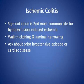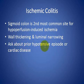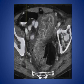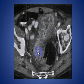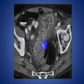Ischemic colitis: the sigmoid colon is the second most common site for hypoperfusion-induced ischemia, presenting with wall thickening and luminal narrowing. Ask the patient about a history of hypotensive episodes or cardiac arrest. Here, axial contrast-enhanced CT scan shows marked thickening of the sigmoid colon in a patient with acute pain and hematochezia. This is a watershed area of the splenic flexure and sigmoid colon, most vulnerable to hypoperfusion-type ischemic colitis.